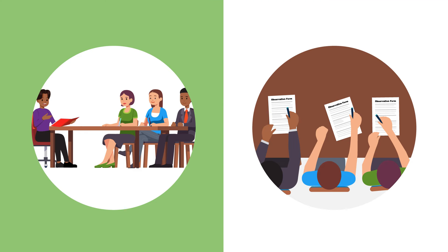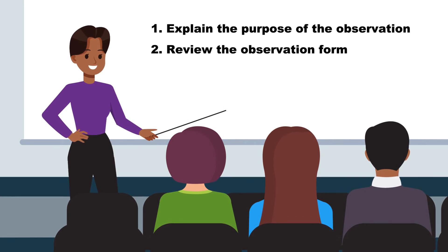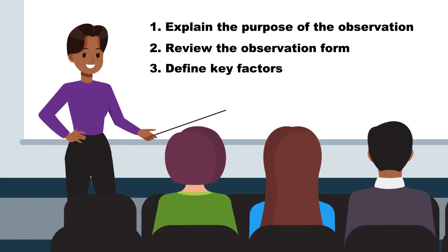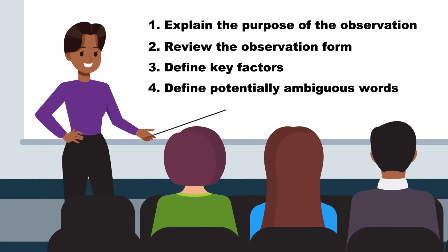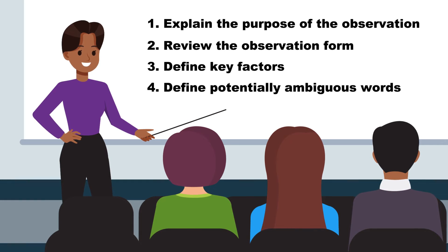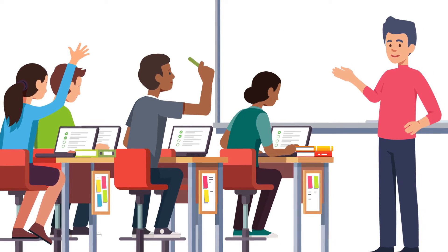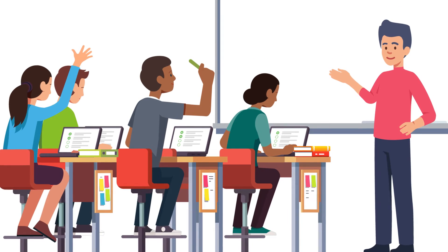Training observers to use the observation form is important for collecting consistent data and reducing sources of observer bias. During training, explain the purpose of the observations, review the observation form, define key factors, and define potentially ambiguous words and phrases such as 'sometimes' or 'active youth participation.' For example, explain that active youth participation means youth are asking and answering questions rather than looking at their phones.